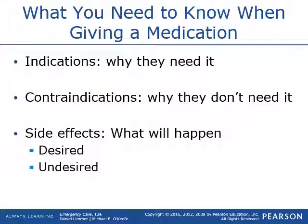Before you give any medication, you need to know why you're going to be giving it and whether that patient actually needs it. The indication tells you that the patient needs it. A contraindication tells you why they don't need it or that you can't give it. A side effect can be both desired and undesired — things like allergic reactions are undesired, while others like headaches or sour taste just come naturally with the medication. You need to be able to explain to the patient the side effects they may feel and why you're going to give them the medication.